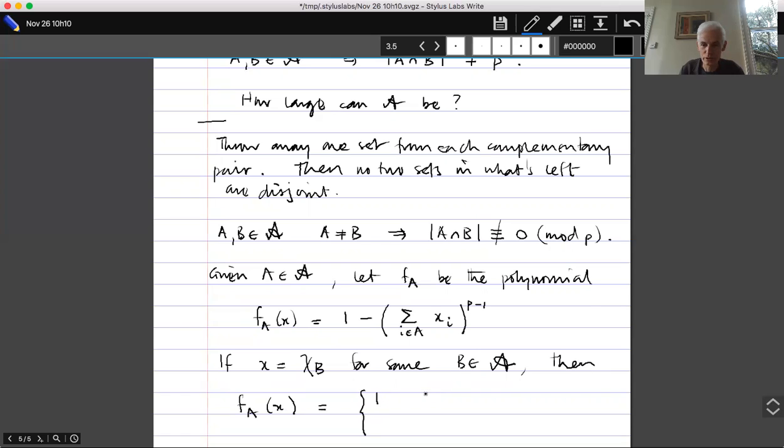Because then the intersection has size 2p which is zero mod p. But if a doesn't equal b, then by the condition that we have here, the size of the intersection is not zero mod p. So that means that this sum will not be zero mod p, so the p minus first power will be one and we get zero. So zero if a doesn't equal b.